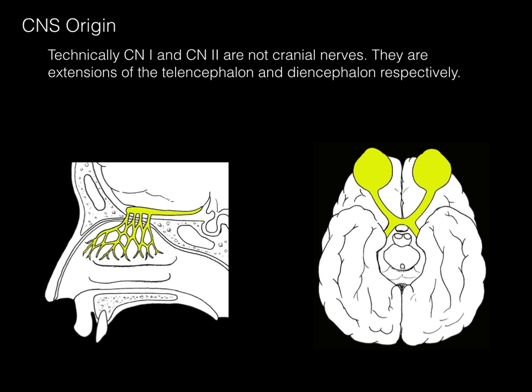Technically, for the cranial sensory nerve and its central nervous system origin, cranial nerves 1 and 2 are not true cranial nerves. They are extensions of the telencephalon and diencephalon, respectively. Therefore, they don't function and perform reflexes to the same extent as cranial nerves 3 through 12 in the brainstem.